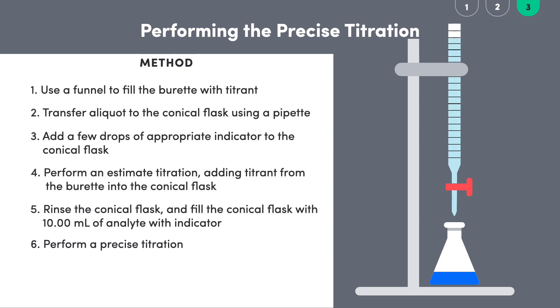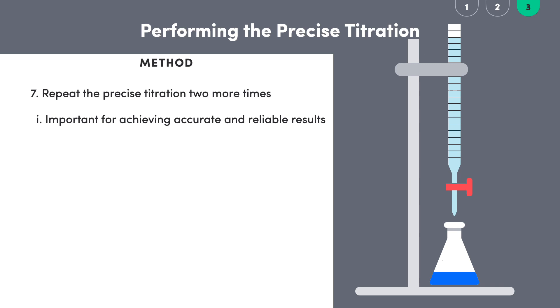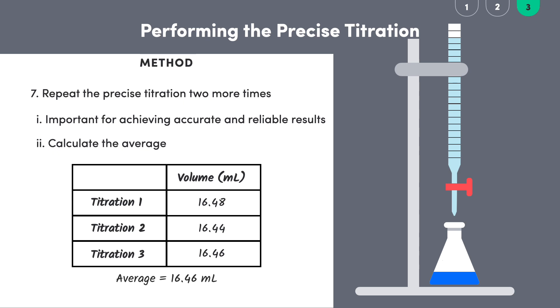Phew, that was intense, but all good because now all we need to do is repeat this titration process two more times. As much of a pain this can seem, this is actually really important for us to achieve reliable results. As long as the three values for the volume of titrant are similar, we take the average to come up with the value that we use in our calculations. So imagine we did this process two more times and we ended up with volumes of 16.44 milliliters and 16.46 milliliters. We average these three values to determine that the volume of sodium hydroxide required to neutralize the sulfuric acid is 16.46 milliliters. Now we have everything we need to calculate the concentration of the sulfuric acid.